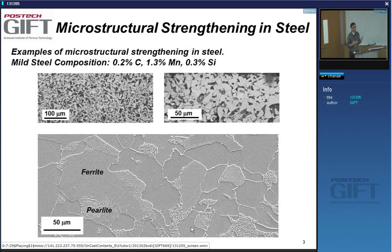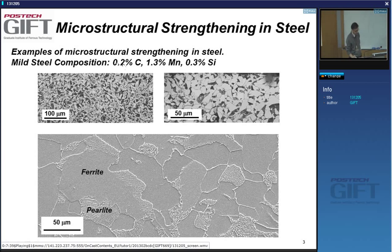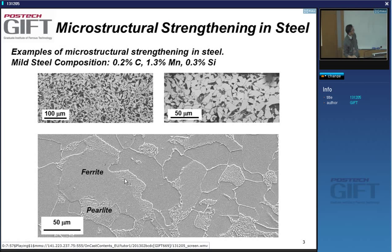Multi-phase materials are actually very common. This constructional steel contains 0.2% carbon. The carbon is not present as carbon — it's present as a carbide, and it's present almost entirely in this black phase here. At higher magnification in the SEM, you can see a nice alternating fringe pattern. You all know that this is pearlite. That's where the carbon is: present as carbide in a lamellar phase.